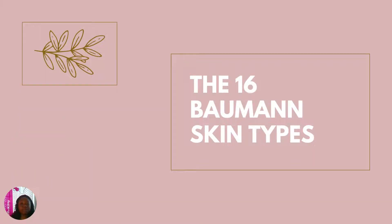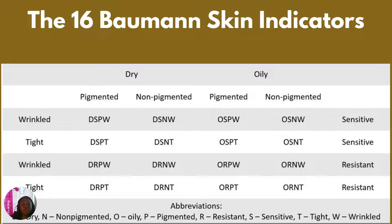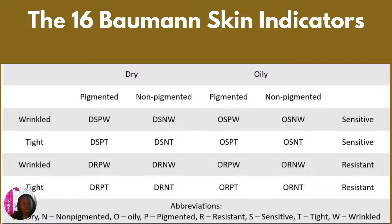We are jumping into the 16 Baumann skin types now. This diagram represents the 16 skin types. The basis of the formulation of these skin types comes from eight characteristics: dry, oily, pigmented, non-pigmented, wrinkled, tight, sensitive, and resistant. These eight basic characteristics form the basis for the 16 Baumann skin types.